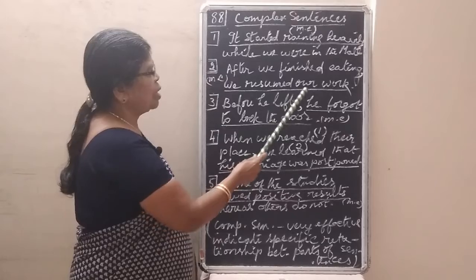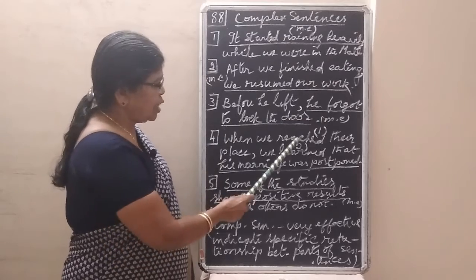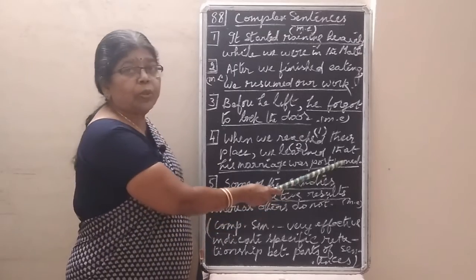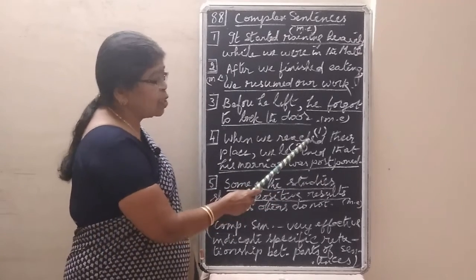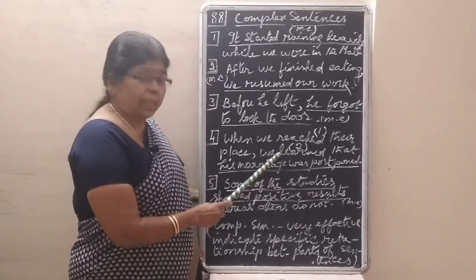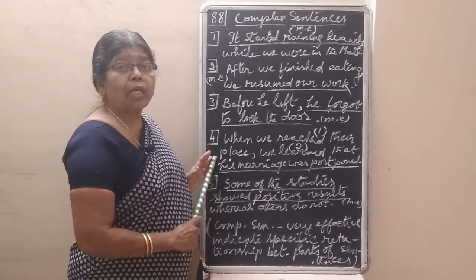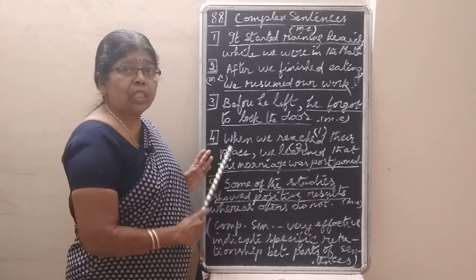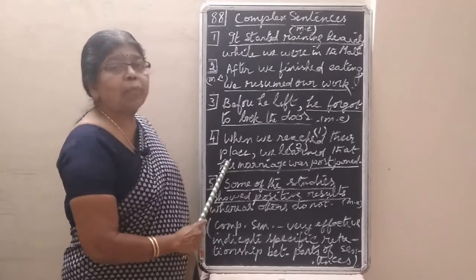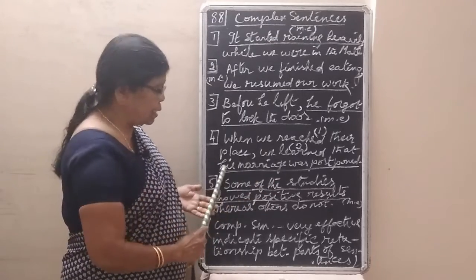After we finished eating, we resumed our work. Before he left, he forgot to lock the door. When we reached their place, we learned that his marriage was postponed. Here we have two subordinate clauses — 'when we reached their place' is the time indicator, and 'that his marriage was postponed' gives the additional detail. This is how you can use more than one subordinate clause to give specific additional details.